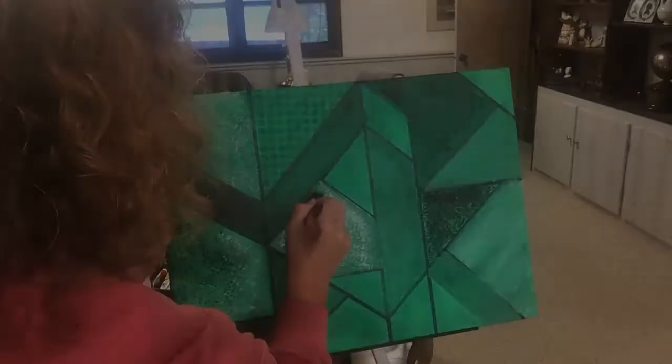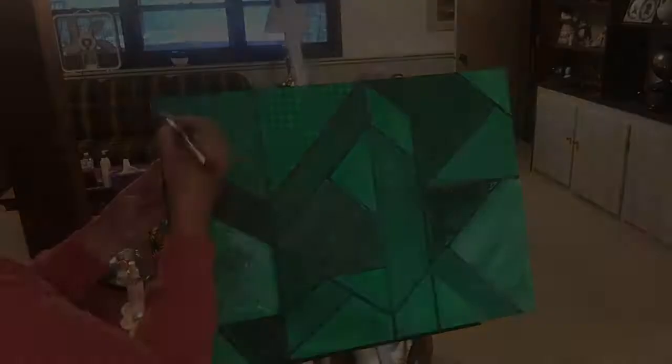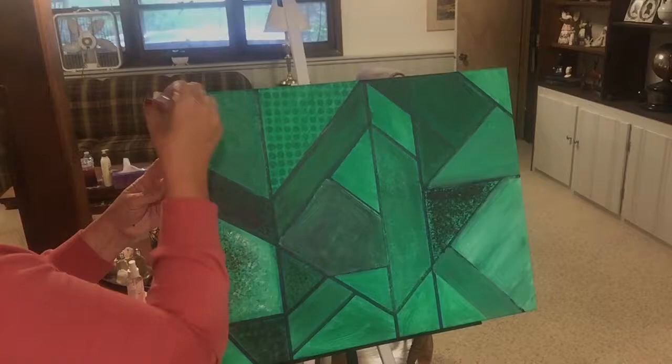I'm also using a rag to wipe away color just to get more of a subtle, marbly look. And you'll see where I bring the rag in just a minute here. Right here is where I'm kind of wiping away the color, moving in some of the hidden shades underneath.